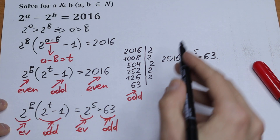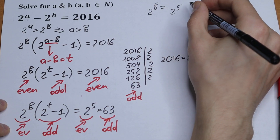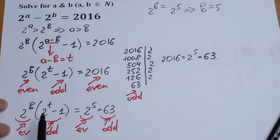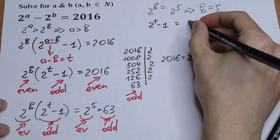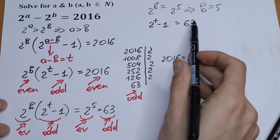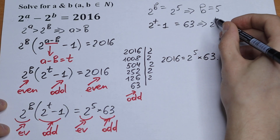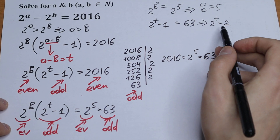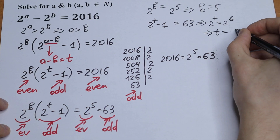So we get two equations. First: 2 to the power b equals 2 to the fifth power, giving us b equals 5. Second: 2 to the power t minus 1 equals 63. Bringing 1 to the right gives 2 to the power t equals 64, which is 2 to the sixth power, so t equals 6.